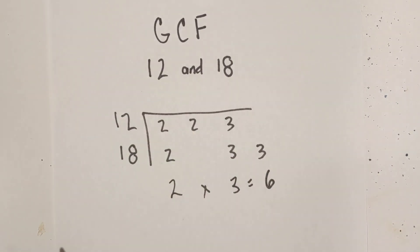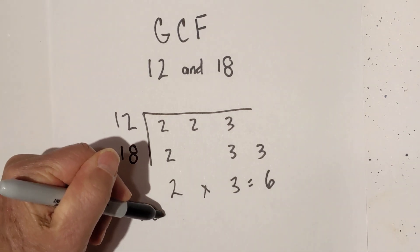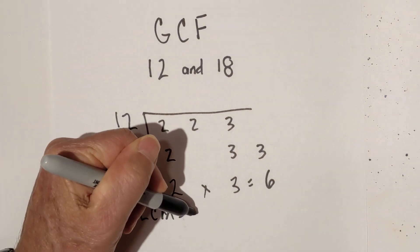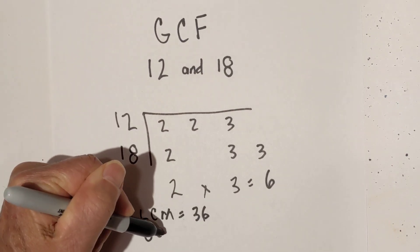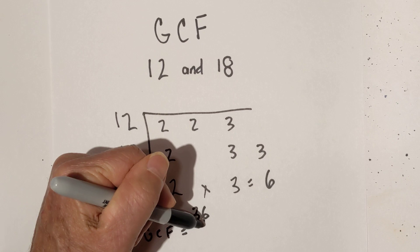So the GCF then would be 6. So in summary, LCM equals 36, and the GCF, the greatest common factor, is 6.